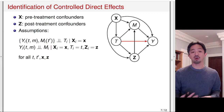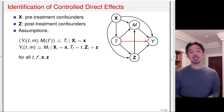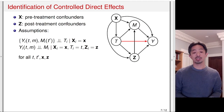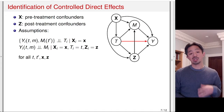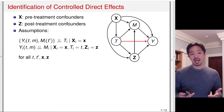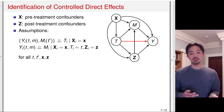This is a standard treatment-being-unconfounded assumption. The second assumption is the unconfoundedness of M, the mediator, given X, T, and Z. So we condition on both the pretreatment confounder and the post-treatment confounder Z, as well as the treatment assignment T. We assume that M is conditionally independent of the potential outcomes. These two assumptions basically imply the absence of unmeasured confounding, both pretreatment and post-treatment.